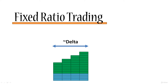The Delta in the fixed ratio trading method actually represents the width of each one of your steps. By width, I mean the number of trades that you have to conduct in order to get to the next checkpoint. Let's think about this for a second.